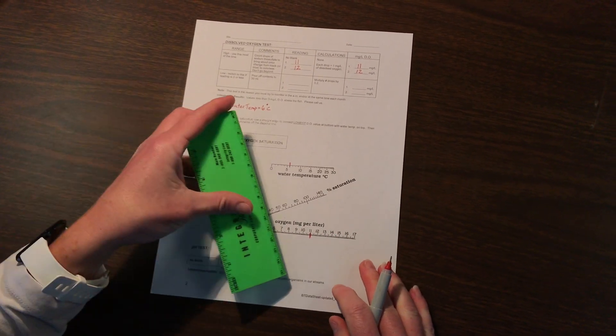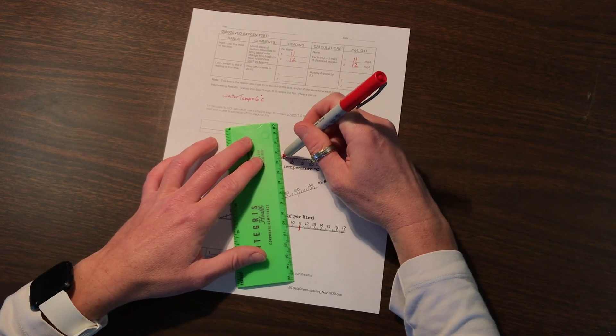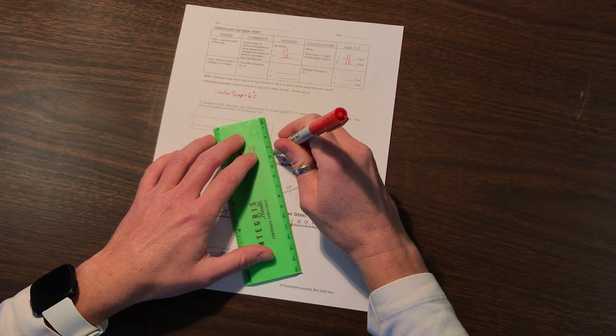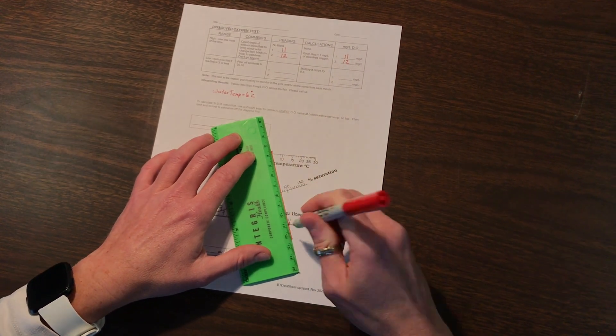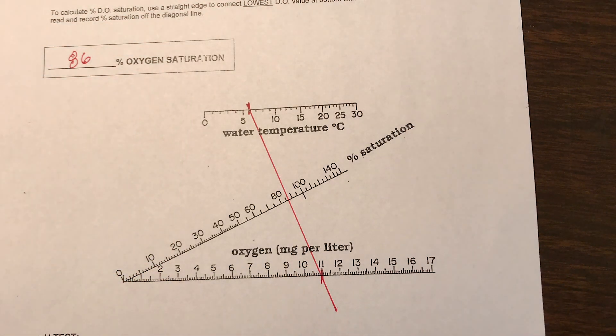Then we use our ruler. Go from water temp to mg per liter of oxygen, draw your line, and then roughly where your pencil or pen line crosses this diagonal axis is roughly going to calculate your percent oxygen saturation. In this scenario it would be—this is going to be 85%—maybe about 86% would be our answer.